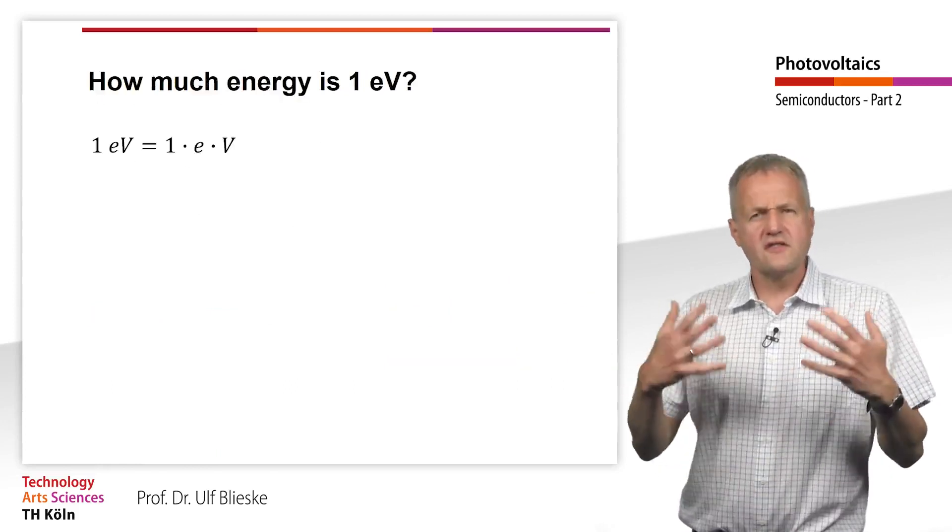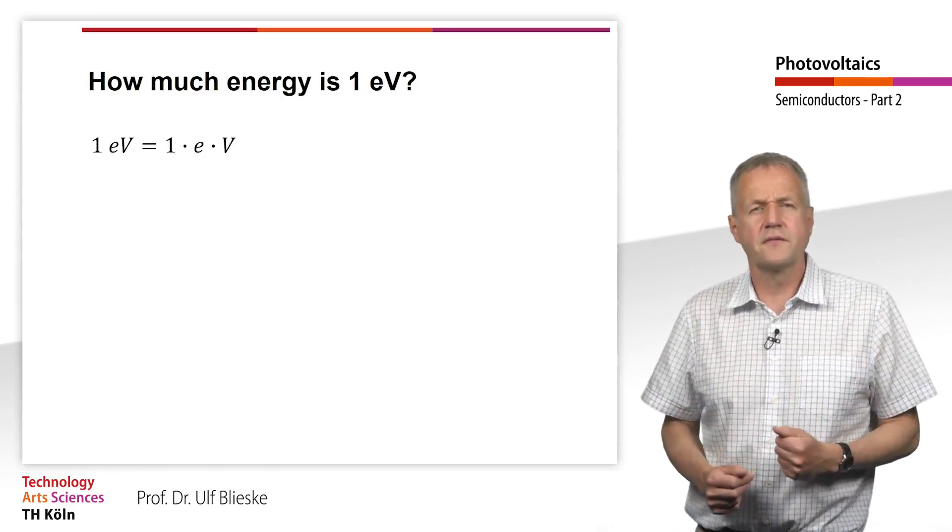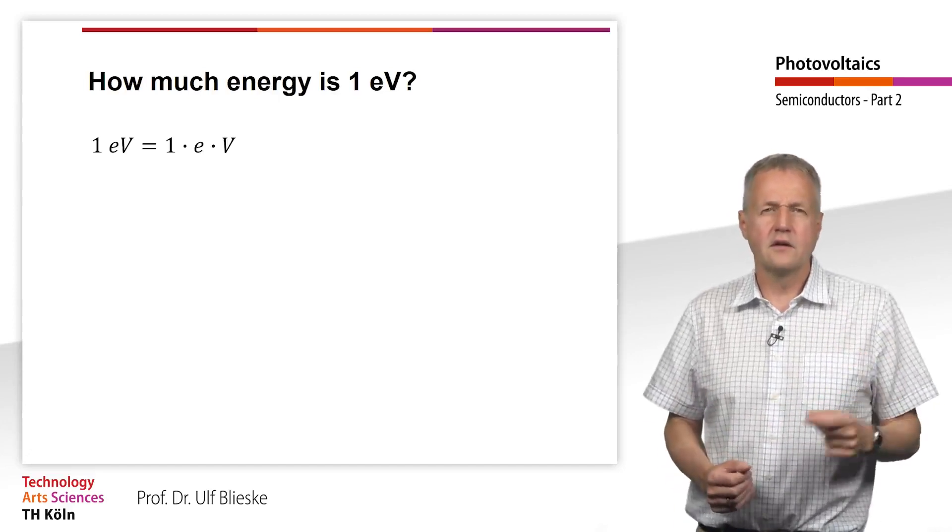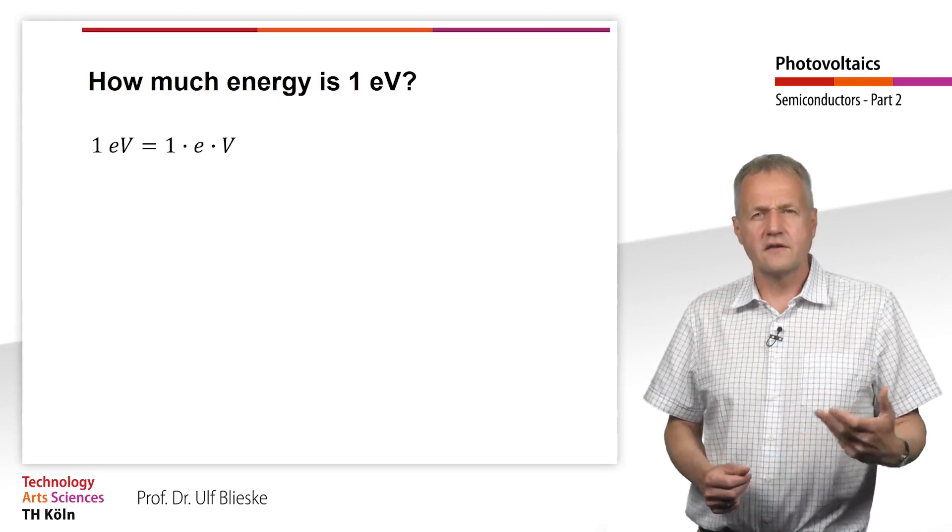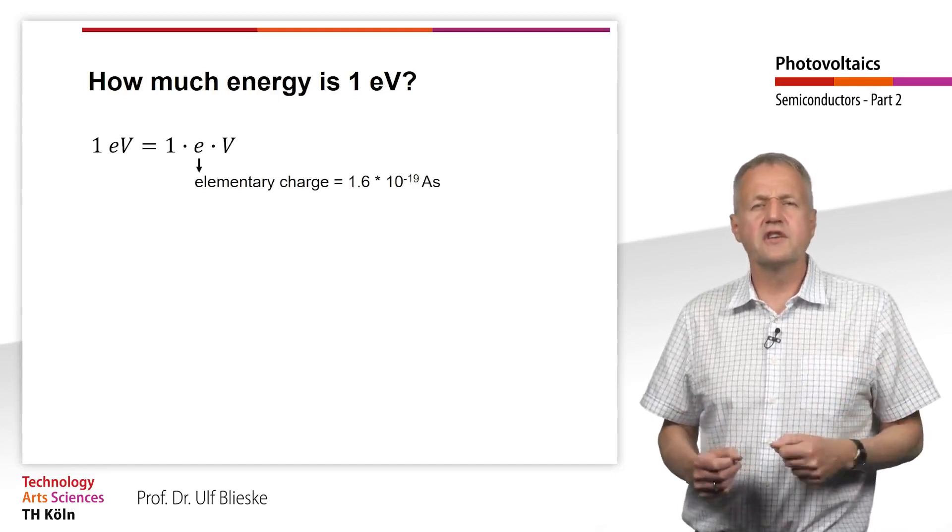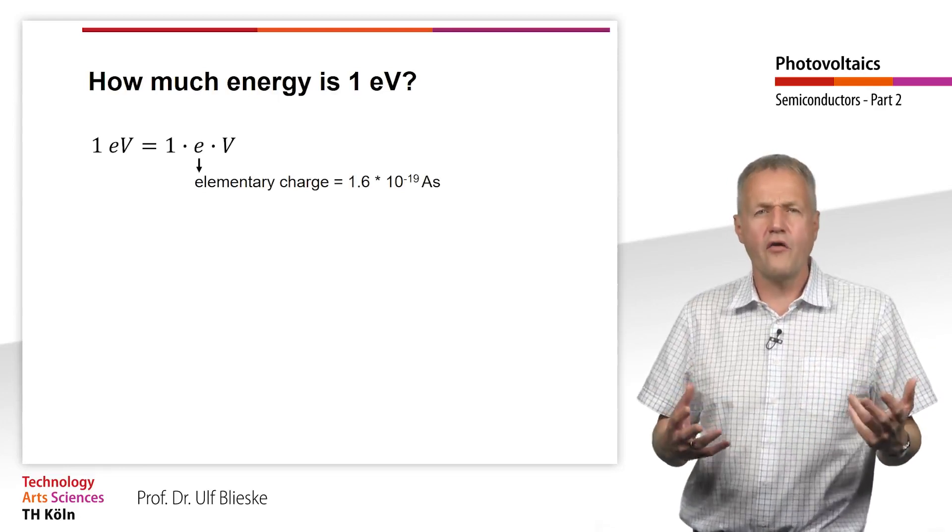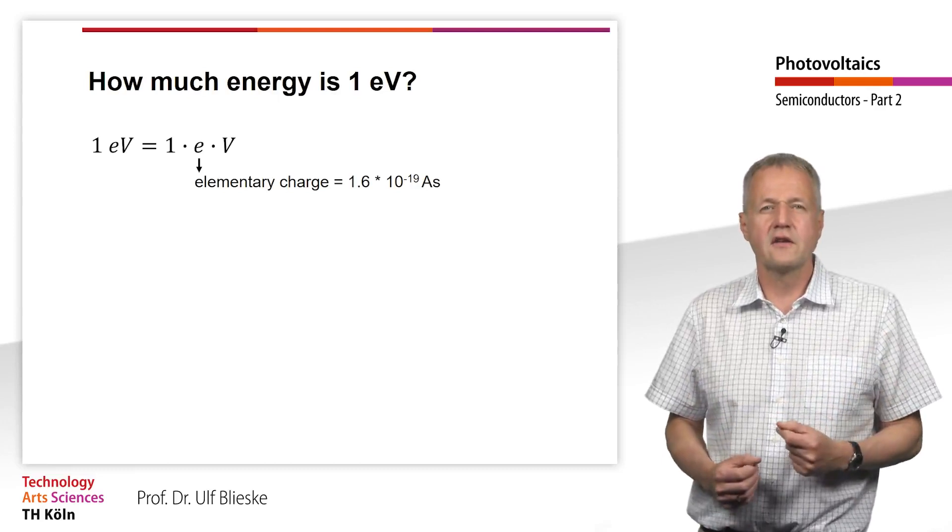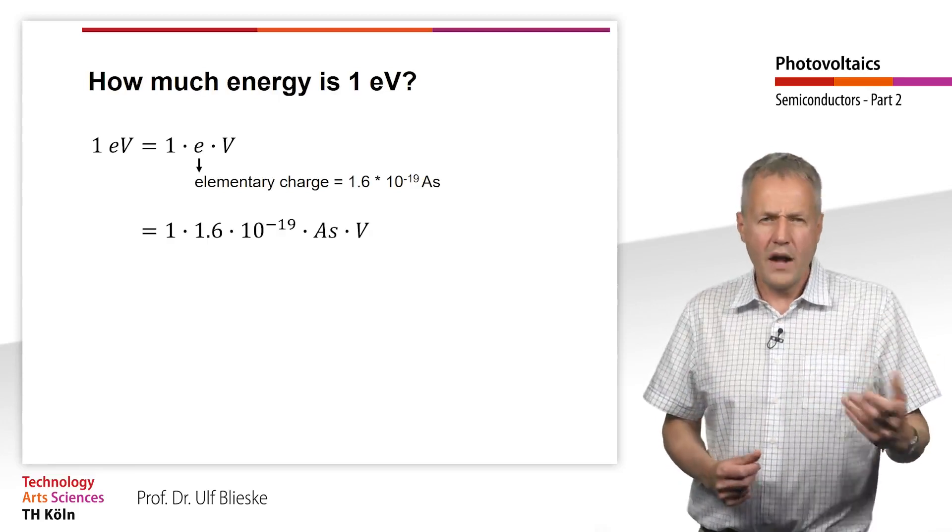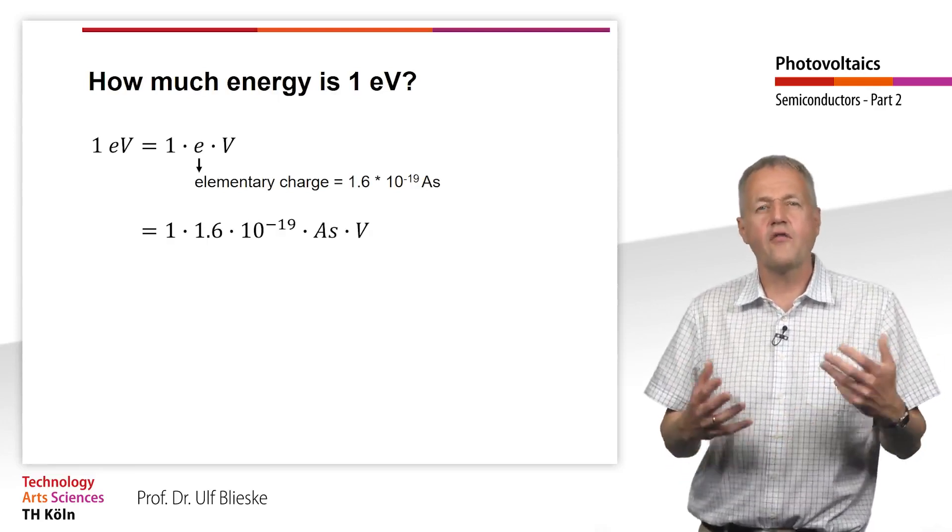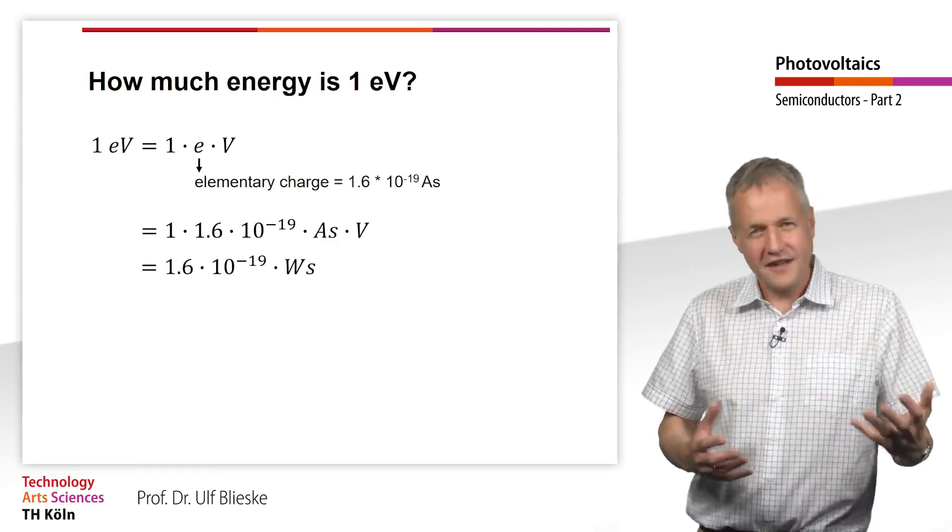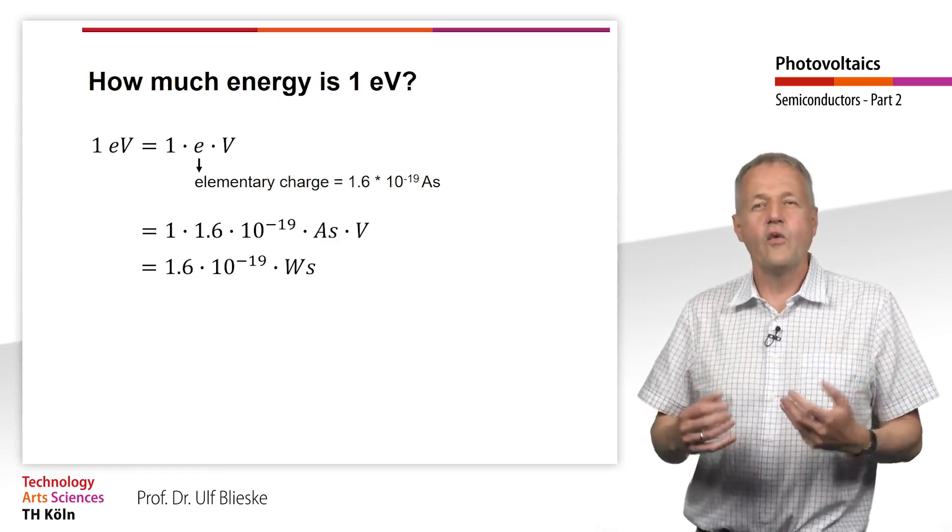We have now mentioned several times the energy unit electron volts. But how much energy is one electron volt? Well, in electron volt there is V volt and E the elementary charge. The elementary charge is 1.6 times 10 to the power of minus 19 ampere seconds. If we put this into the band gap, we get 1.6 times 10 to the power of minus 19 ampere seconds times volt. This is 1.6 times 10 to the power of minus 19 watt seconds.